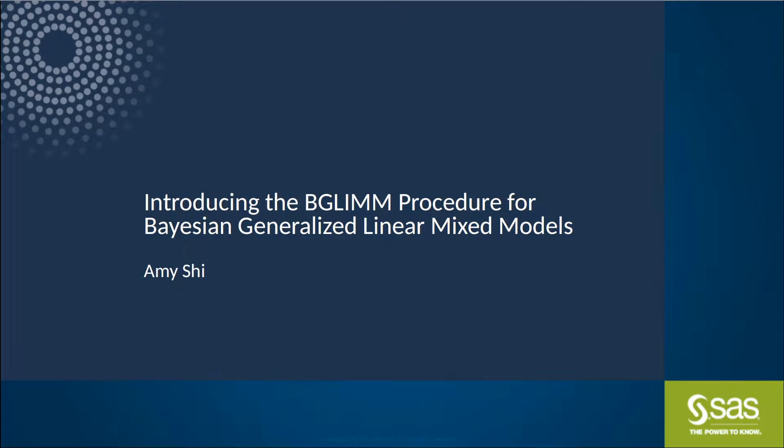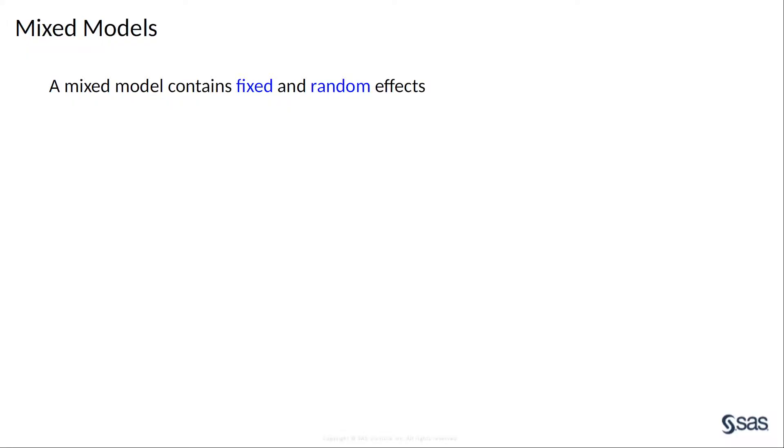BGLIM stands for Bayesian Generalized Linear Mixed Models. It is a Bayesian procedure that is designed specifically for fitting generalized linear mixed models. A mixed model contains both fixed effects and random effects.